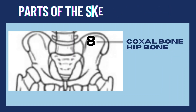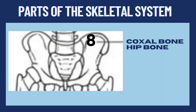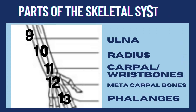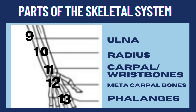Aside from this, we have the coxal bone or hip bone — this is very easy to identify because you can touch your hips. You have one pair: a right and a left hip bone. Number 9 includes the ulna, radius, carpal or wrist bones, metacarpal bones, and phalanges — these are the parts of the skeletal system found in our arms going down to our fingers.